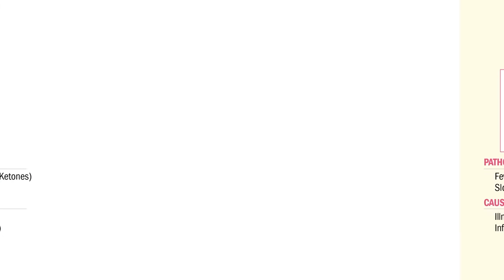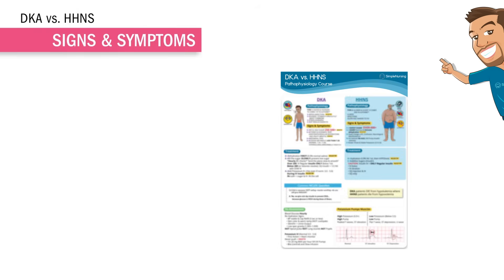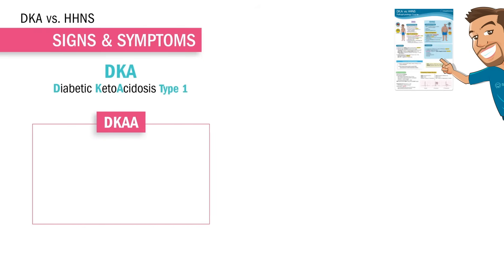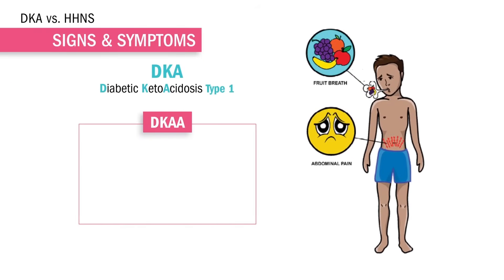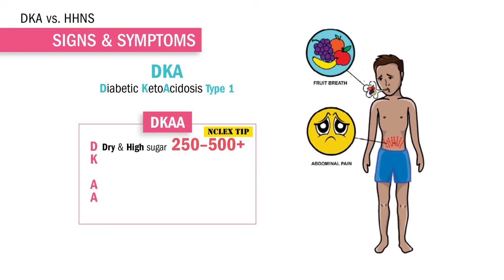What are the main differences in signs and symptoms? For DKA, just remember the acronym DKA. D is for a dried body and high sugar — 250 to 500 — from the lack of insulin. That's a huge keyword: 250 to 500 with type 1 diabetics.